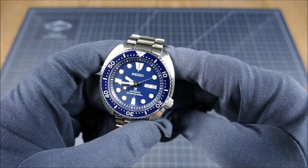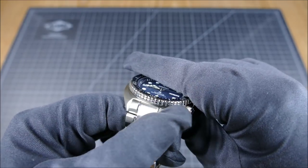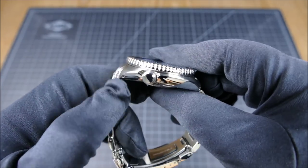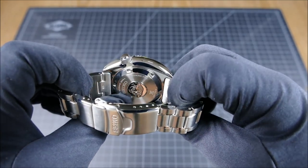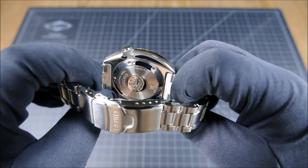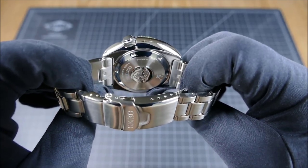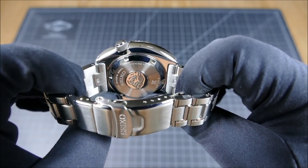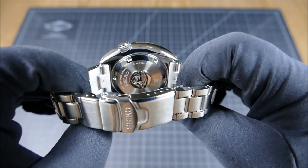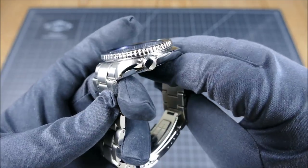The lugs are 22 millimeter and they are drilled, which is very nice. Unfortunately on the back, the bracelet is pretty much only made for a watch with drilled lugs, which we've seen from Seikos before. It does make putting the bracelet back on a little bit harder, although it is definitely very easy to take off.